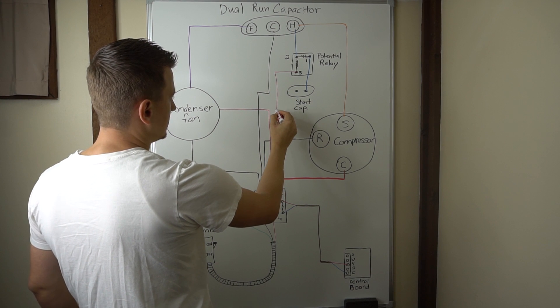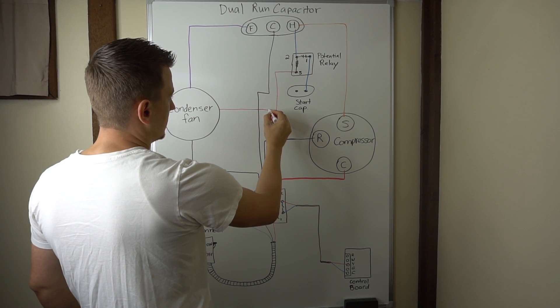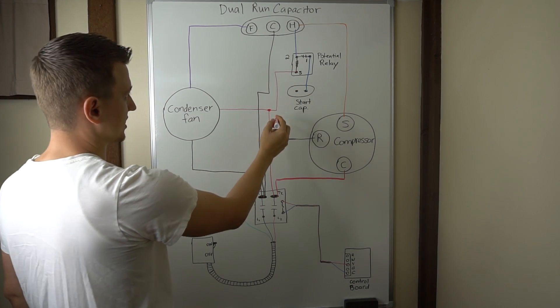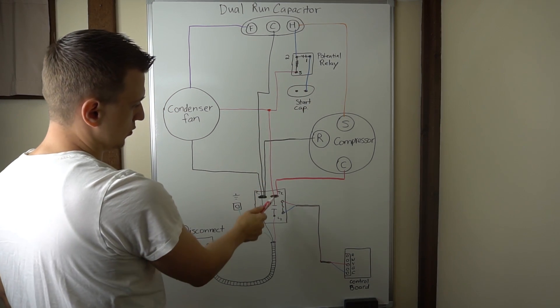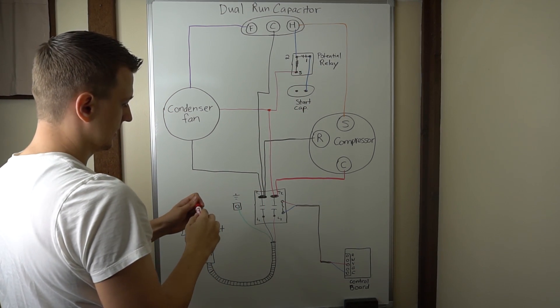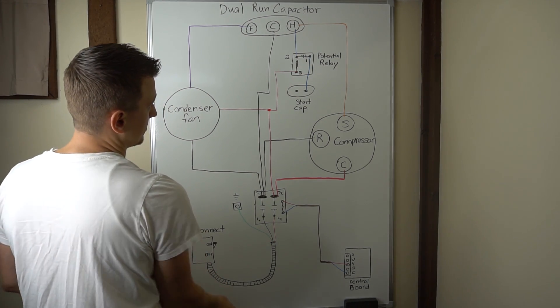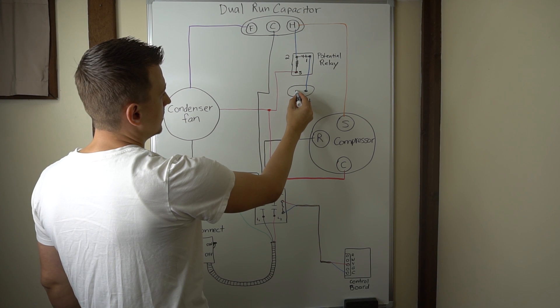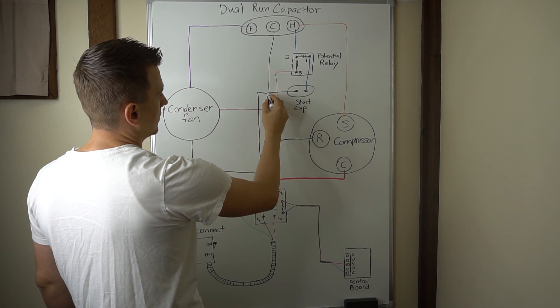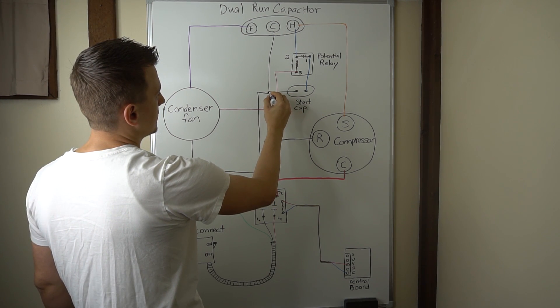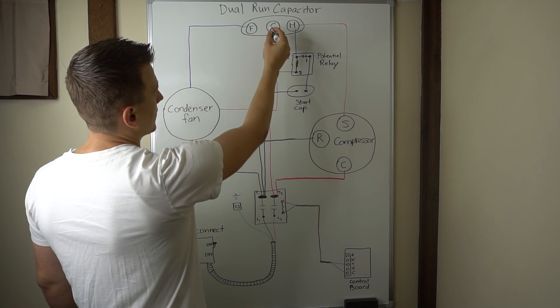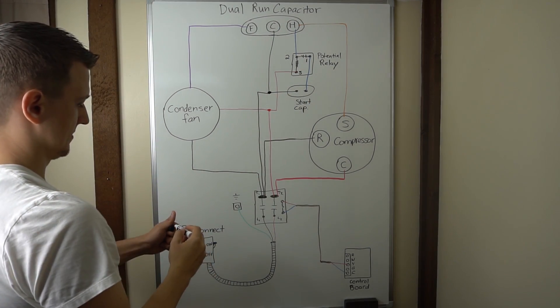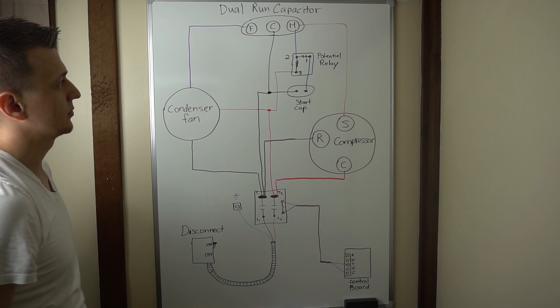And then 5 on the potential relay will go to T2. So it would look like this. And I'll just put a dot here, which means that these wires go to the same place. So 5 will go to T2. And then the other side of your start capacitor, you'll have a wire going from there to common on the run capacitor. Or it could be hooked up to T1. So that's what that would look like.